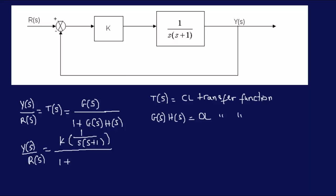But in this case, we don't have to. So, we only have G of S, because H of S here is one. So, we would have K, one over S, S plus one.